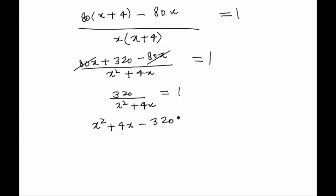Is equal to 0. On splitting the middle term we get x plus 20 into x minus 16 is equal to 0.